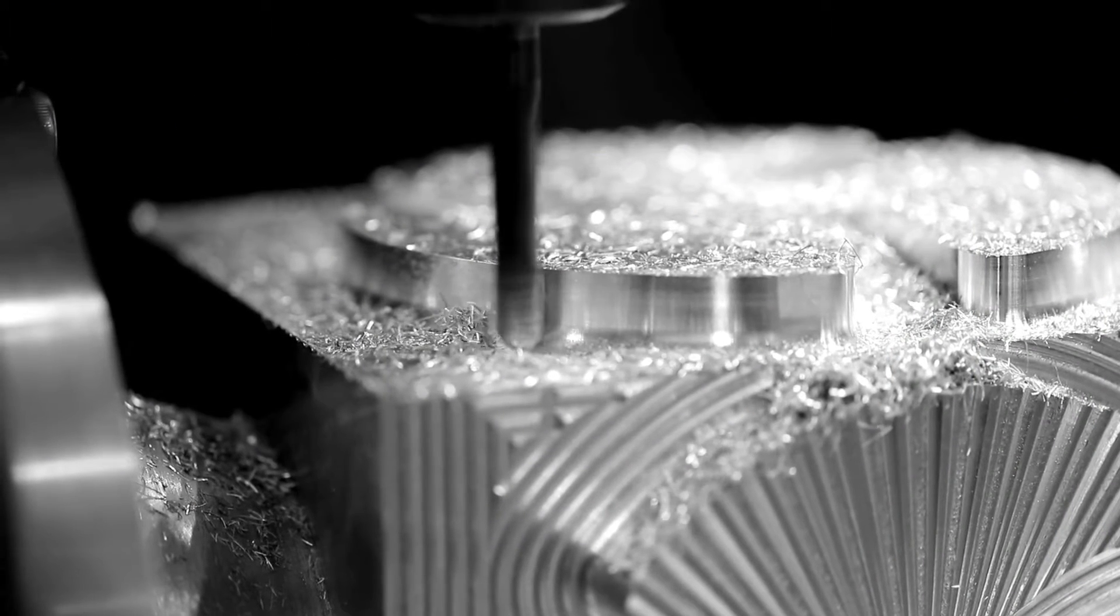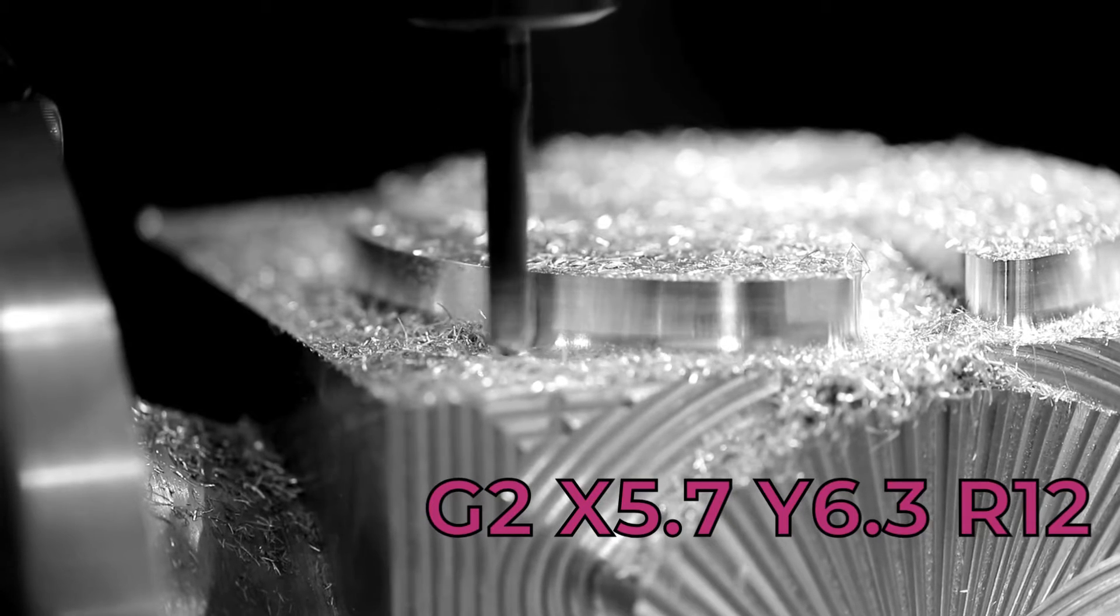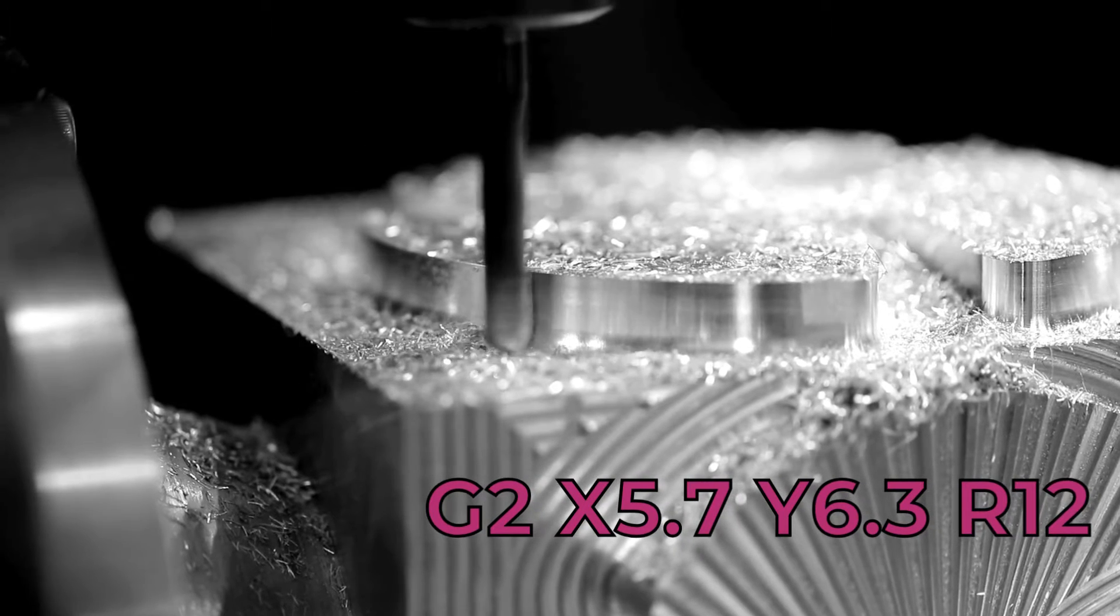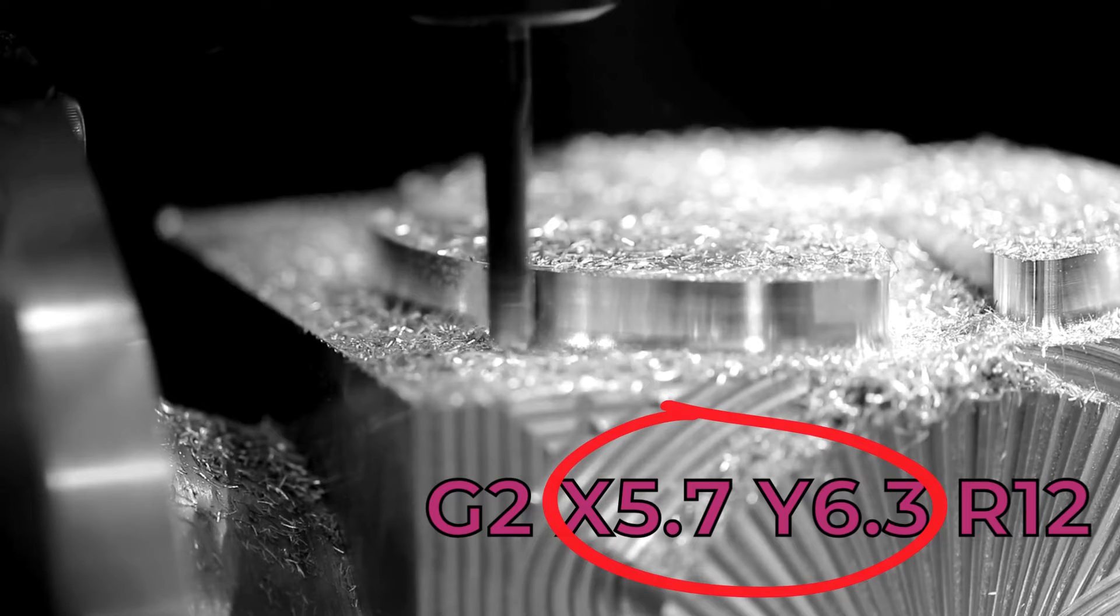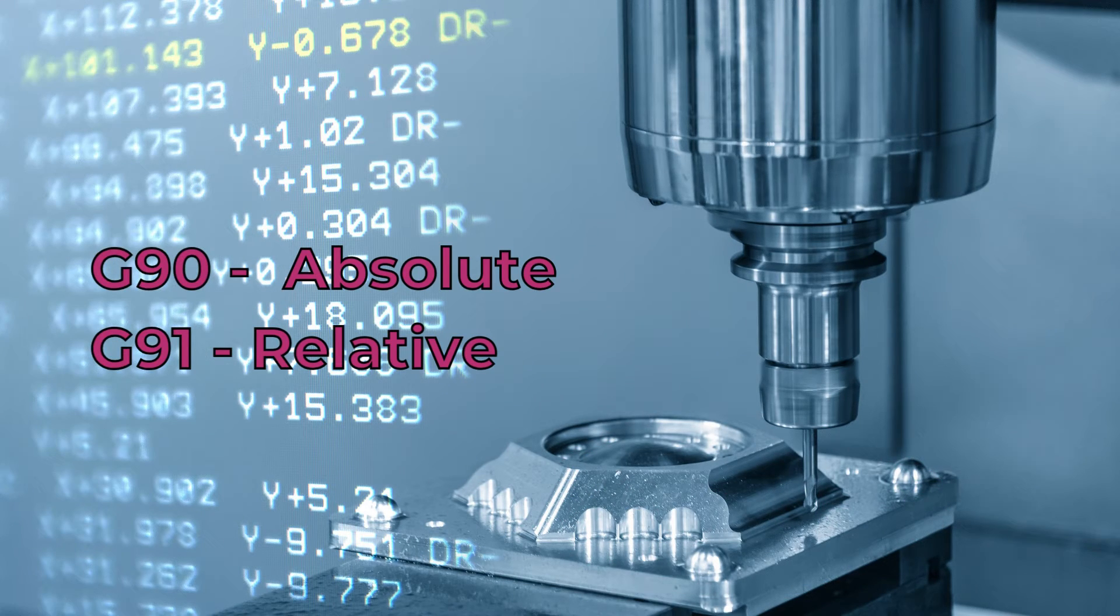Circular movement in G-code is achieved by using the G2 and G3 commands. These commands direct the CNC machine to move along a circular arc from its current position to a new coordinate. The new coordinate can be either absolute or relative, depending on whether the machine is in G90 or G91 mode.